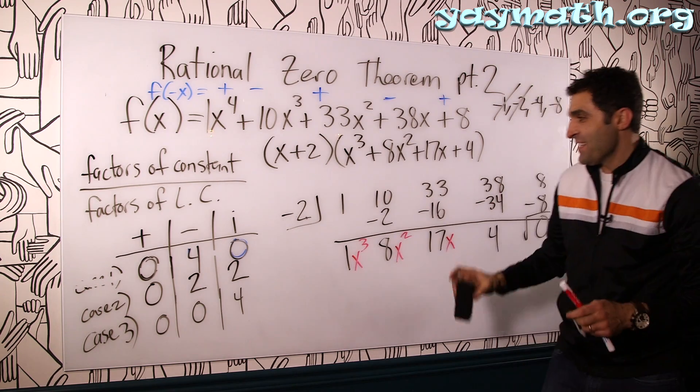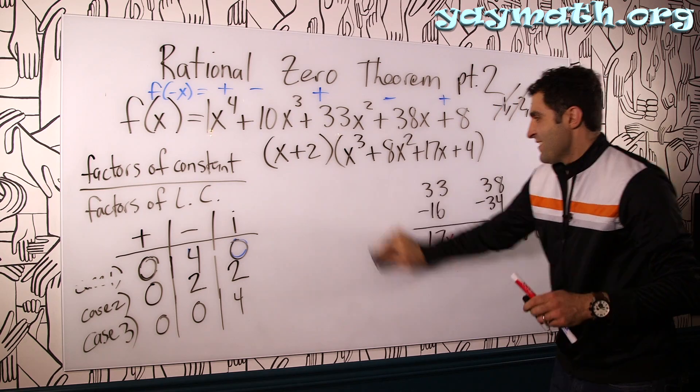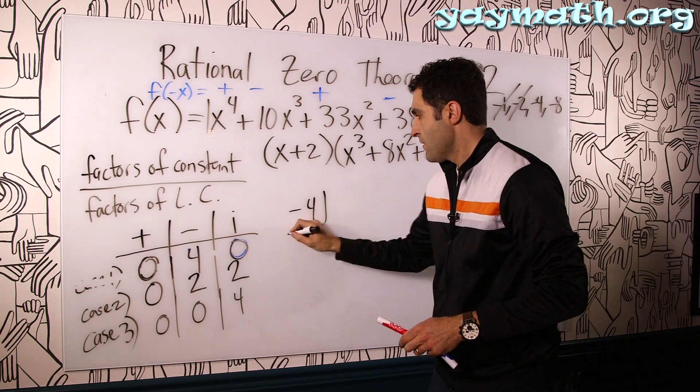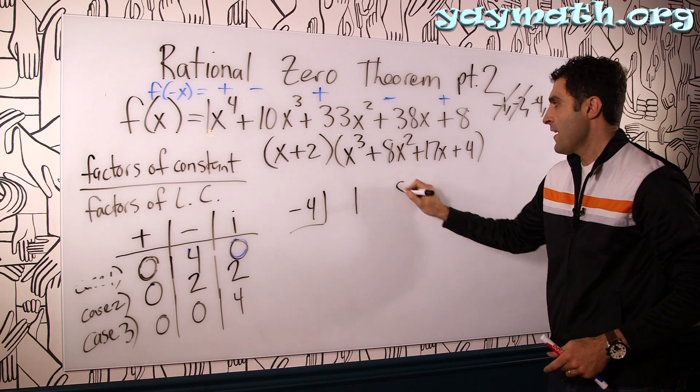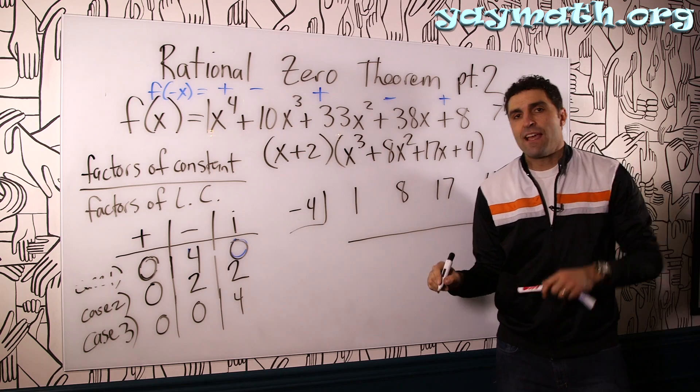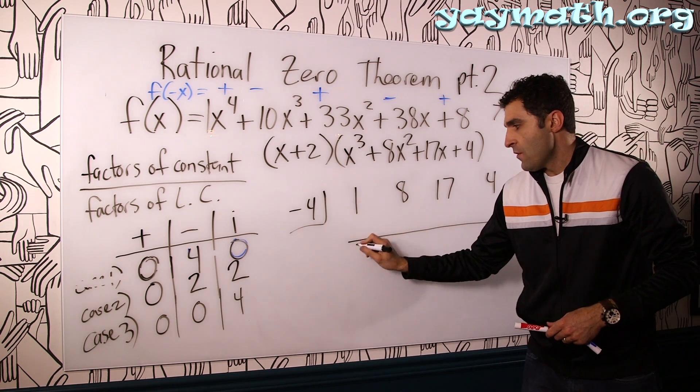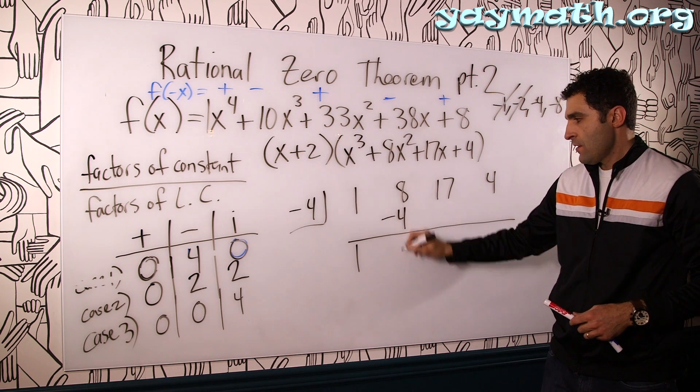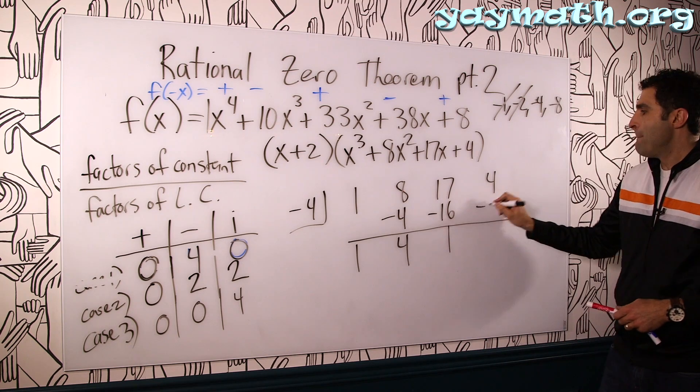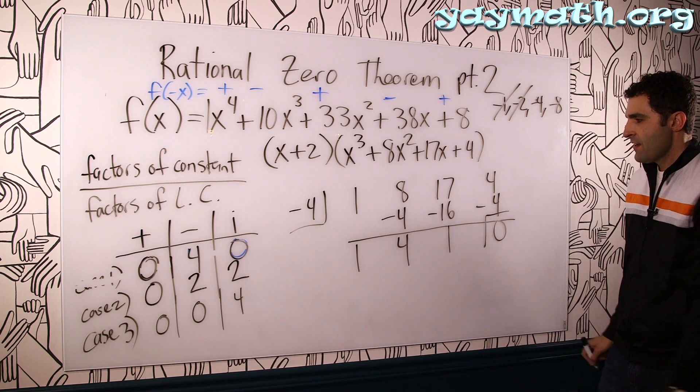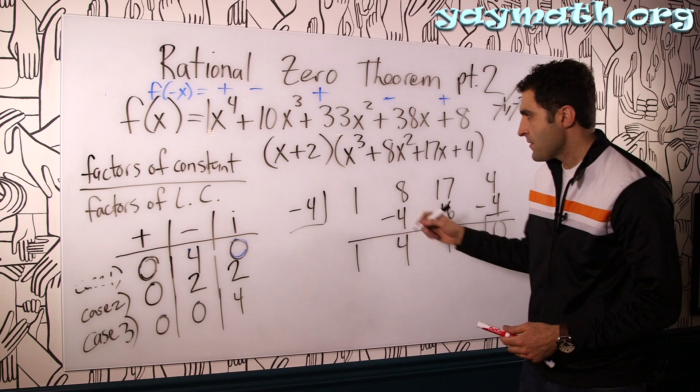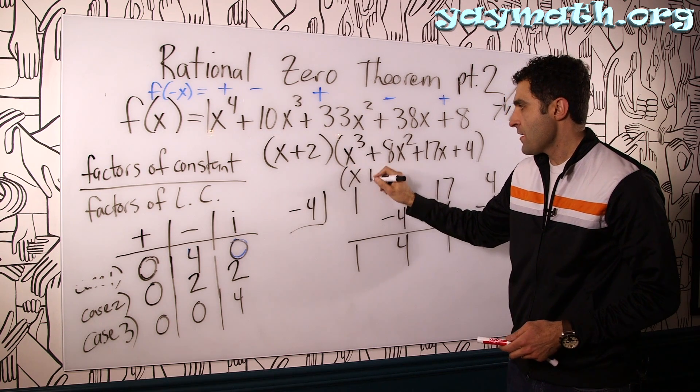Please work. Please. All right. Bring it down. Negative 4. All right. Let's break this one down. 1, 8, 17, and 4. It's kind of fun is to discover it together. I don't know if negative 4 works. 1. We're going to find out together. Negative 4. 4. Multiply. Negative 16. Add 1. Negative 4. Boom. 0. Nice. So we found our second solution, which is negative 4. All right. Let's bring down all our factors. So this would be x plus 4.